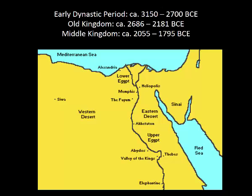We have the pre-dynastic period, the early dynastic period, the old kingdom period, and the middle kingdom period. There's a fifth period, the new kingdom period, but that's going to be a whole separate lecture, so it's not going to be included here.